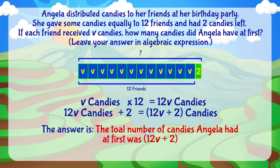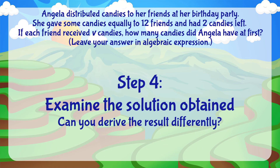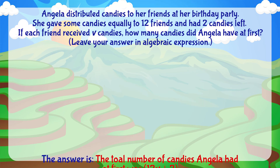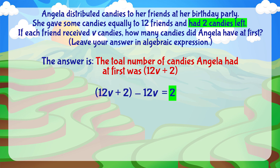Hence, the total number of candies Angela had at first was 12V plus 2. Let's check our answer to ensure it is correct. Our answer shows the total number of candies Angela had at first was 12V plus 2. After giving V candies to 12 friends, what she had left was equal to 12V plus 2 minus 12V, which equals 2 — the same as the number given in the question. Angela had 2 candies left, therefore we know our answer is correct.